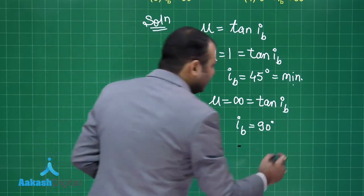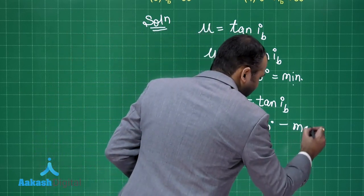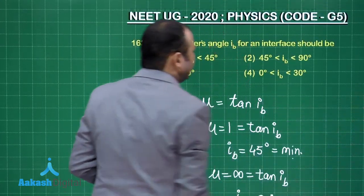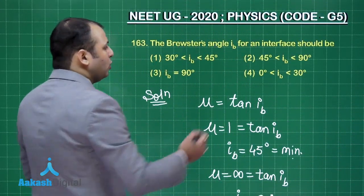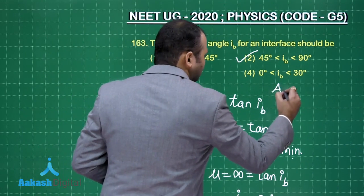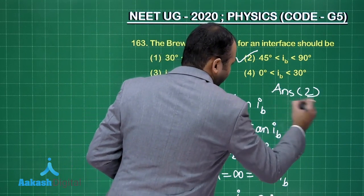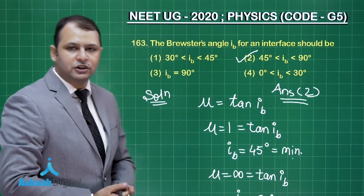Clear? So from here you can say this is the maximum value. So from the given options, of the four options, only option number 2 seems to be correct. I hope you have understood this very easily.